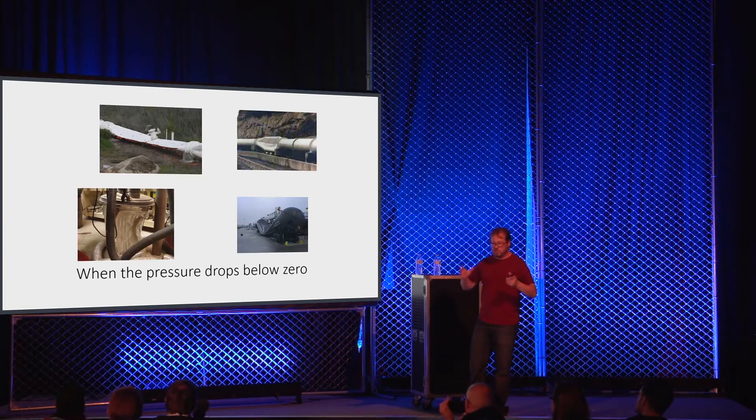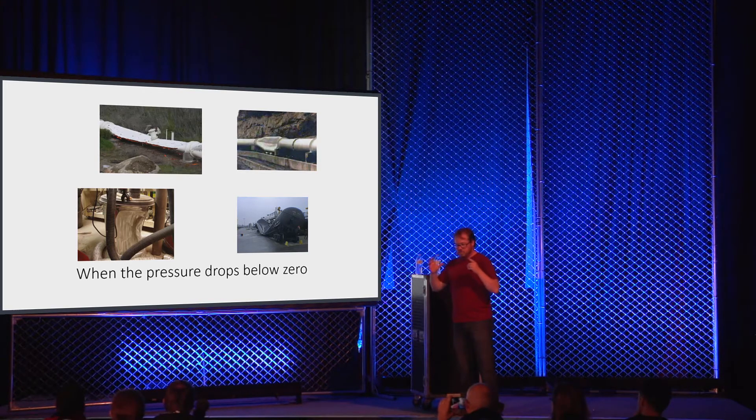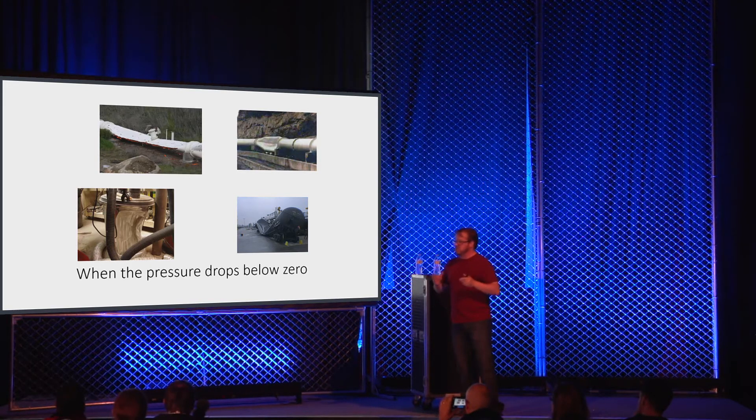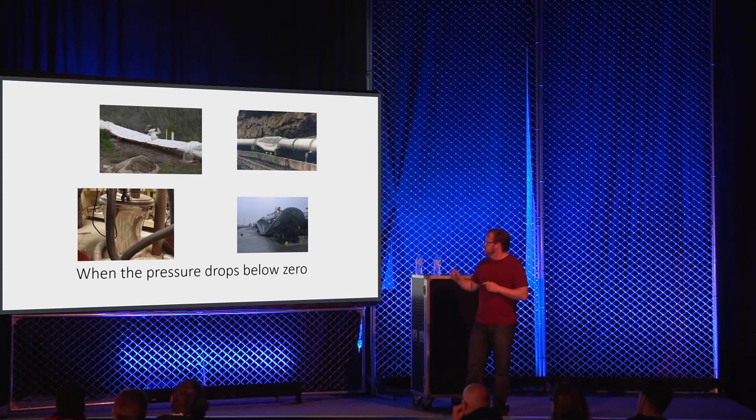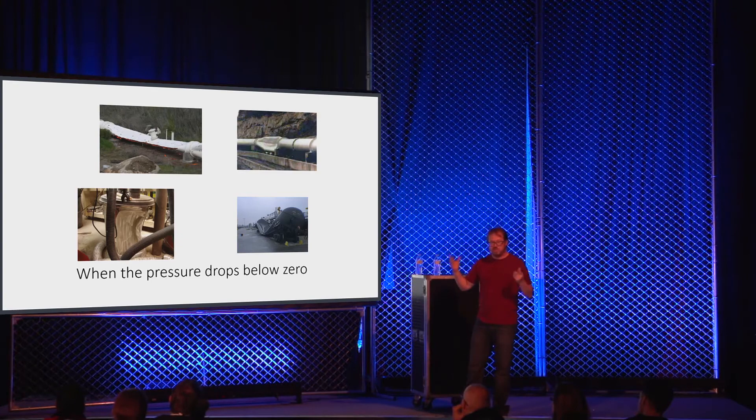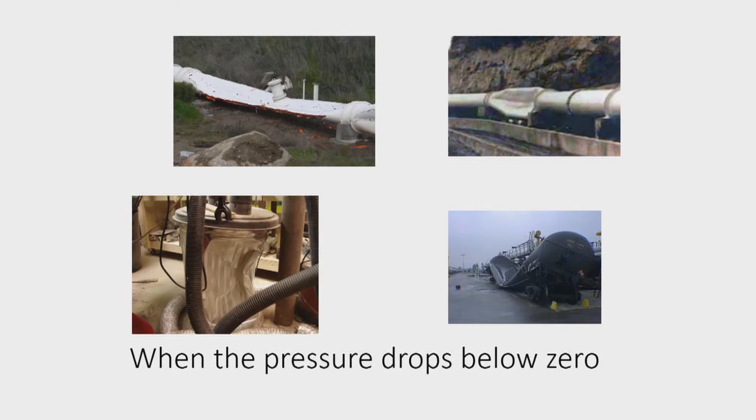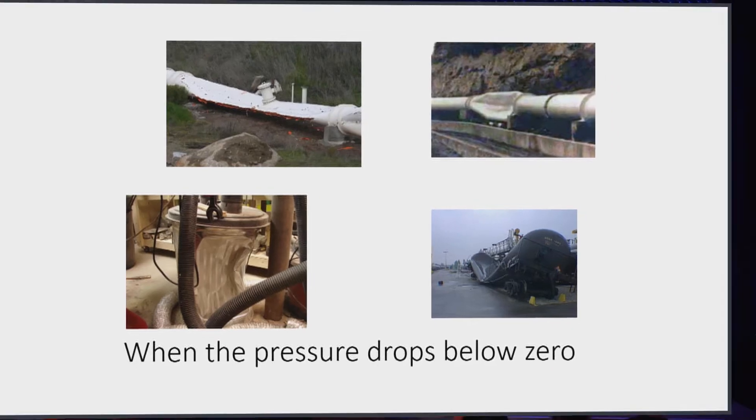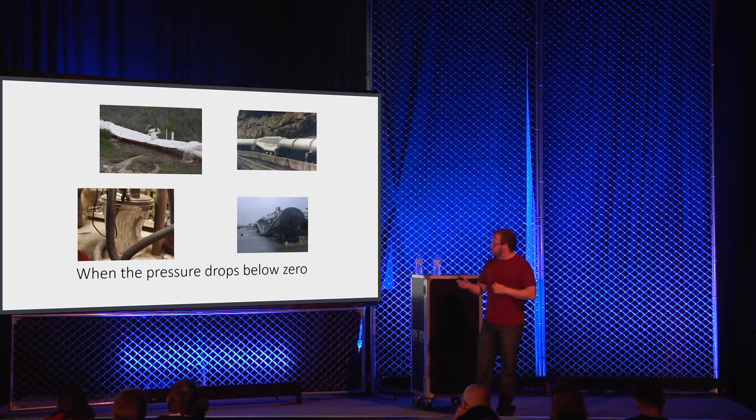Also, pressure vessels and the places we expect things to go bad are super hard and usually can take a full vacuum. But everything else we plug into them don't react well when things drop below zero. So these are all pictures of things where a control system has pulled a vacuum on the system. And so these vessels can take lots and lots of positive pressure but can't take very much negative pressure.